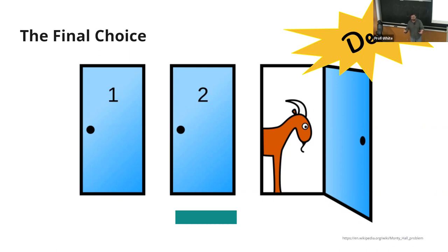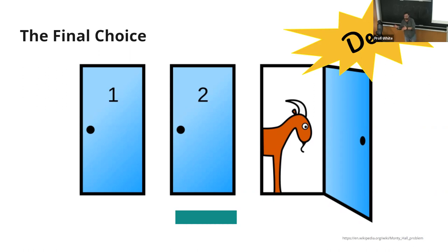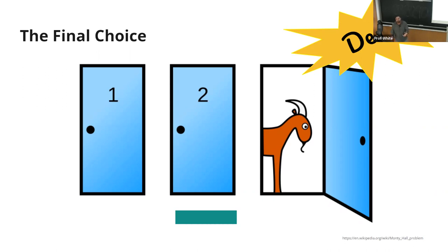So what do you think — should you stick with your existing choice or switch to the other door? The answer is that your probability is actually better by switching. Despite the fact that a door has been revealed, the probability hasn't turned into a 50-50 chance — the probabilities have remained the same from the original selection.